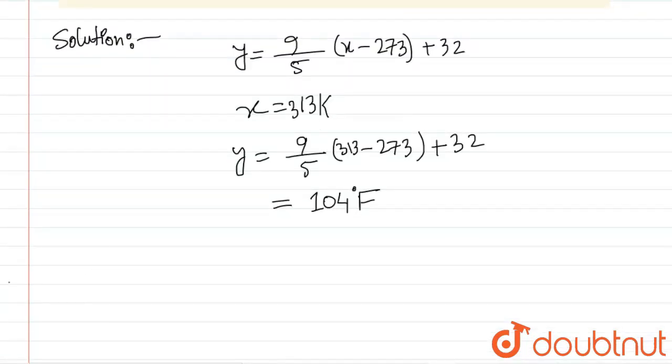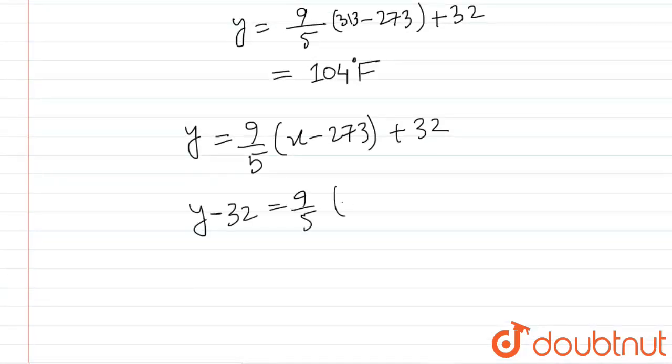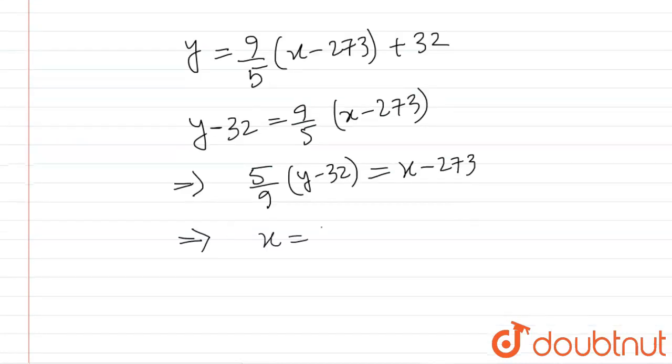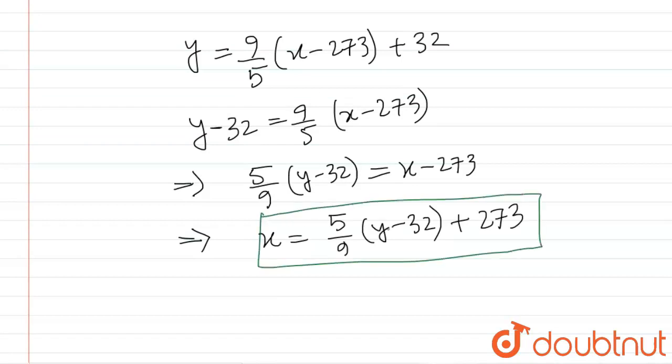Our next question: we need to find out the equation in terms of Kelvin in terms of Fahrenheit. So what we will be doing, let's write the equation again. y equals 9 by 5, x minus 273, plus 32.